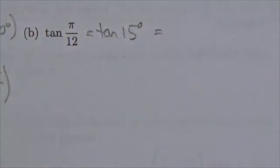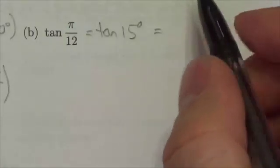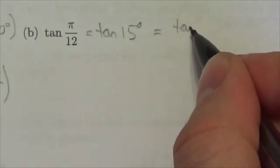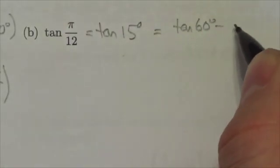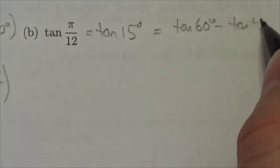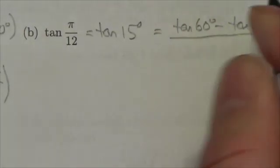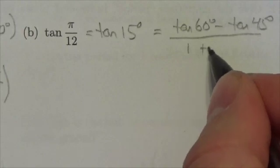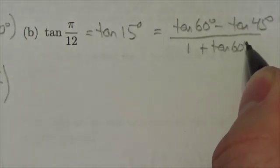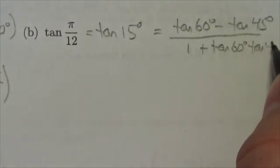Now, I could either make it 45 minus 30 degrees, or I could make it 60 minus 45 degrees. Now, my advice to you, and this is based on experience, I would do it like this. I would make this the tangent of 60 degrees minus the tangent of 45 degrees, all over 1 plus the tangent of 60 times the tangent of 45.